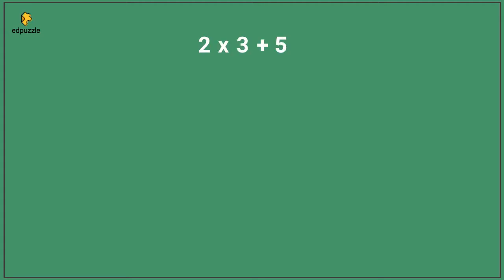Let's say we want to solve this problem: 2 times 3 plus 5. We would multiply 2 times 3, which is 6. Next, we need to bring down the remaining parts of the problem — the addition symbol and the 5. Now we solve 6 plus 5.